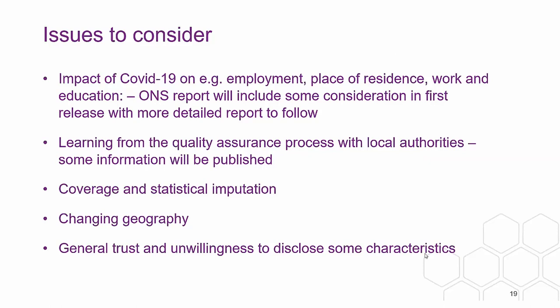General trust and non-willingness to disclose certain characteristics is also a concern. For example, in 2011, around 50,000 people counted themselves as gypsies and travellers in the census, while estimates from other sources put the figure at around 300,000 — the great majority choosing not to disclose. New characteristics around sexuality and gender identity are voluntary anyway, so there's an element of choice, but other categories also see non-disclosure.